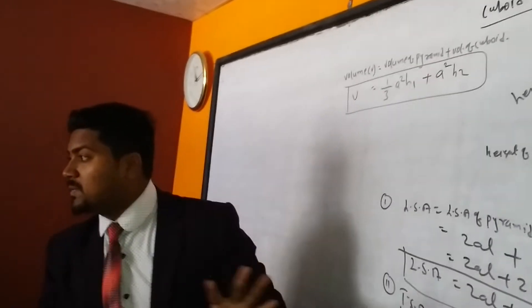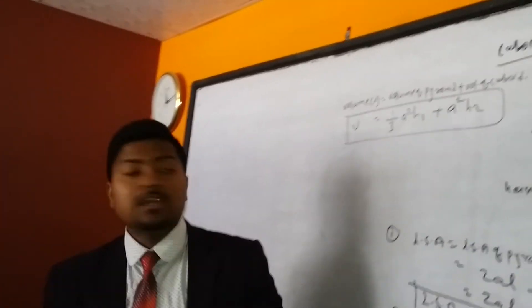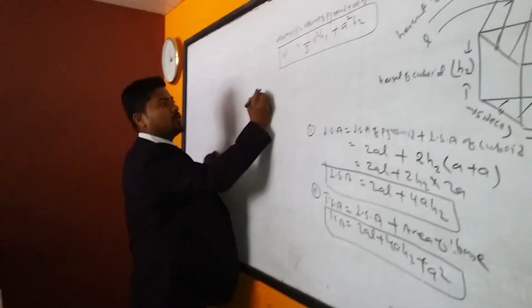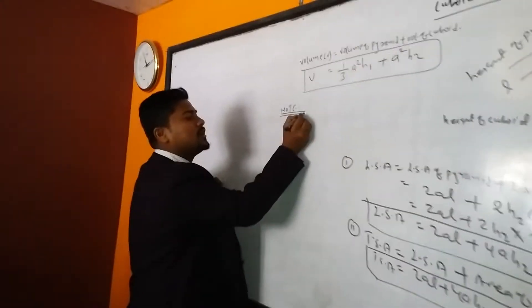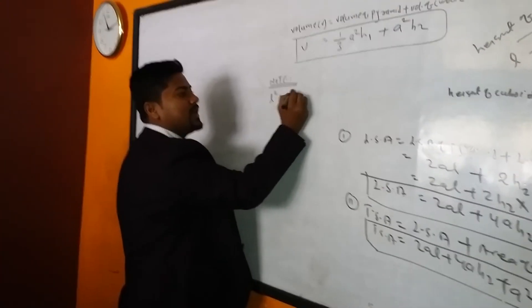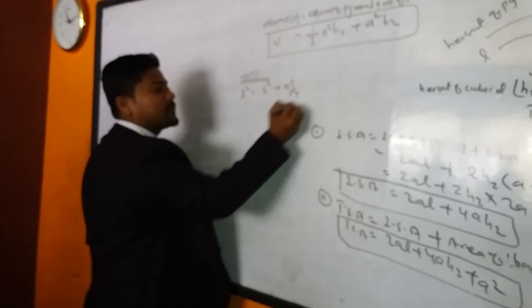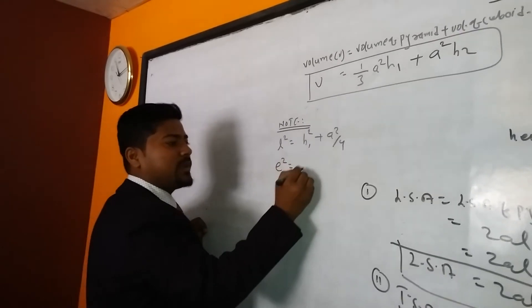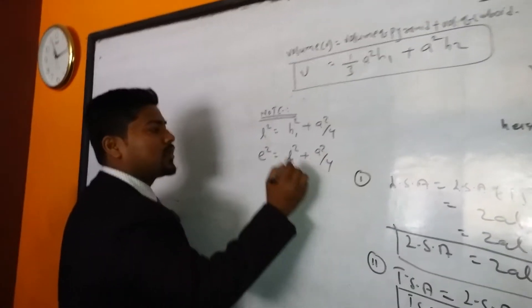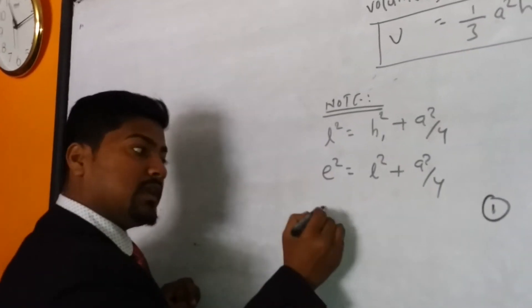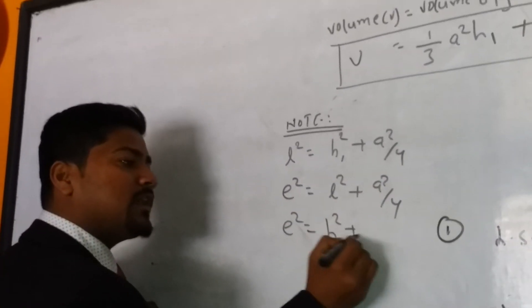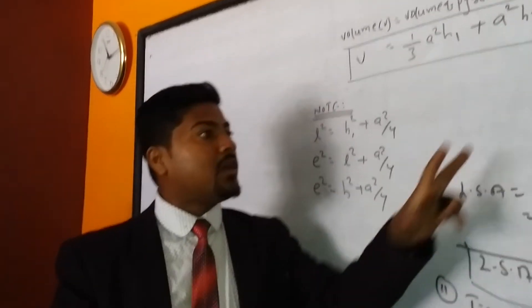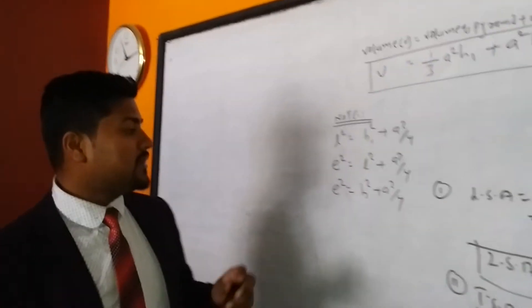Important notes to remember: sometimes we need to find L (slant height) or other values. Note 1: L² = h² + a²/4. Note 2: e² = L² + a²/4, where e is the lateral edge. Note 3: e² = h² + a²/2. These three formulas are very useful for finding LSA, TSA, and height when values are not directly given.